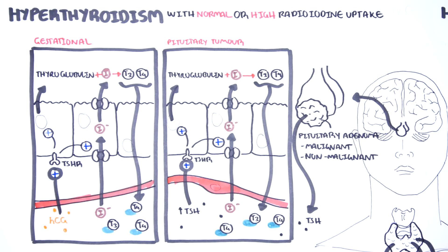The causes of hyperthyroidism discussed so far are all examples of an increase in thyroid hormone synthesis. This is why they are categorized as hyperthyroidism with normal or high radioiodine uptake, because an increase in thyroid hormone synthesis means more iodine needs to be taken up.